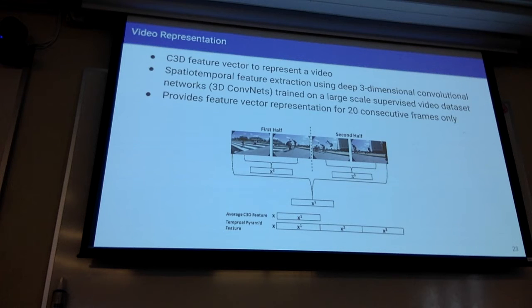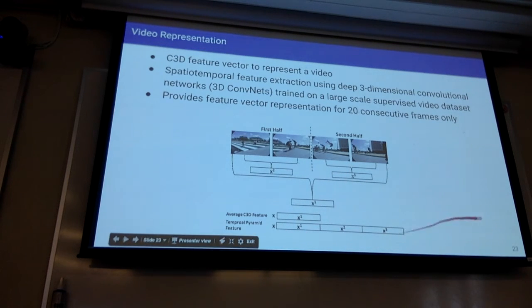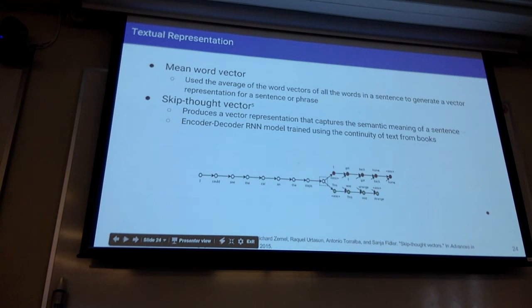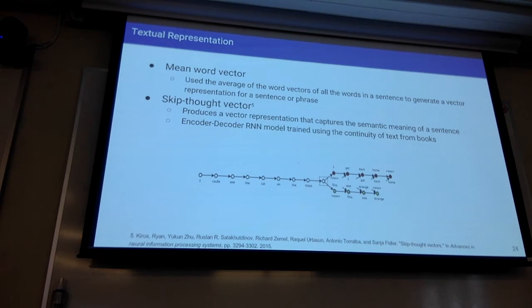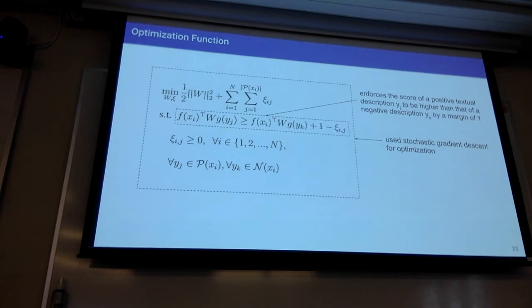Since most training and testing videos contain more than 20 frames, we devised a temporal pyramid structure where we divide the whole video into two parts, get the C3D feature vector for each part, get the average C3D feature for the whole video, and concatenate them into a larger feature vector. For sentence descriptions, we can use word vectors — taking the average over all words — or a skip-thought vector which gives a single feature vector for the whole sentence. We then learn an SVM-like optimization function that learns weights.